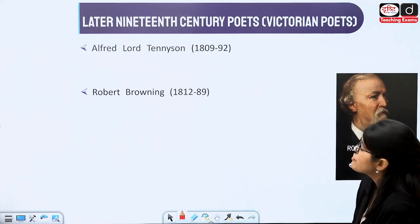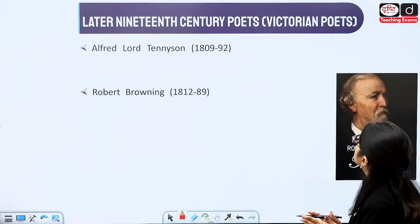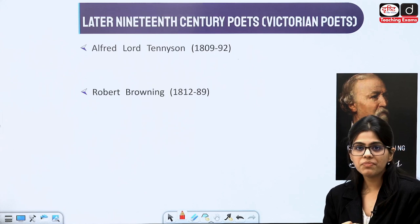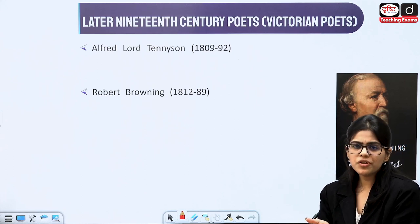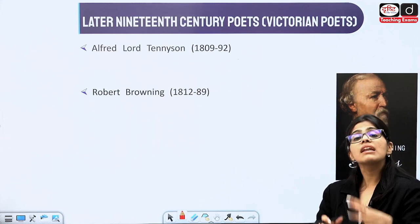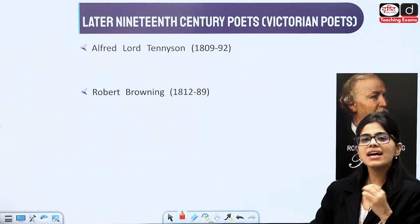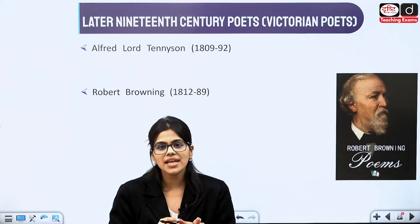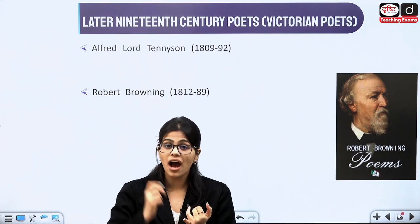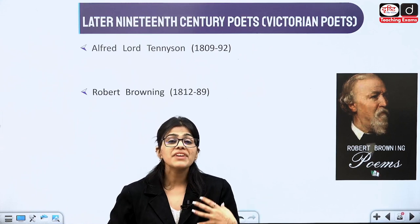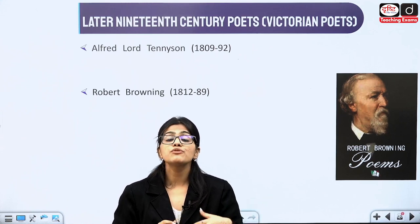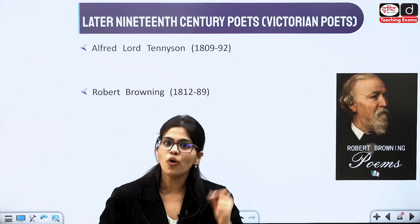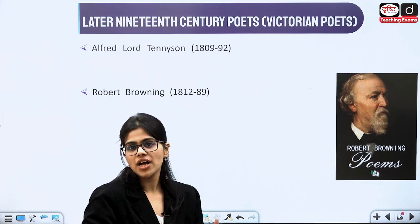Then comes the Victorian period, the later 19th century. Not only poets but novelists became very important in the Victorian period. The industrialization started, the railway system began, giving the Victorian era a very different touch of its own. When you study the Victorian era, we will first positionalize how it started — what were the days, how women used to dress, what changes were happening. Culturally and historically, we will cover all of this through the flowcharts I have prepared.